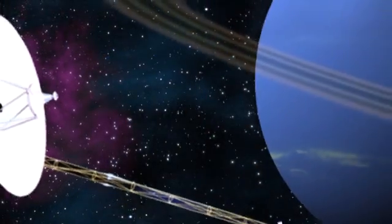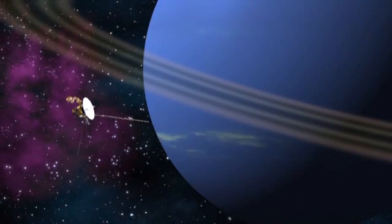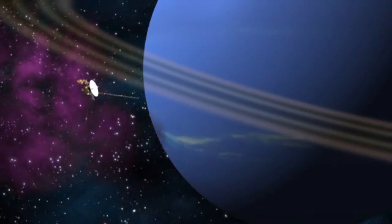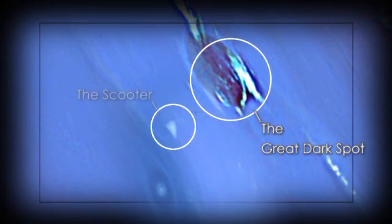NASA's Voyager 2 revealed some intriguing new features on its visit to Neptune in 1989. It showed six rings of varying thickness, a giant storm called the Great Dark Spot, and a patch of cloud called the Scooter, because it circled the planet very fast.